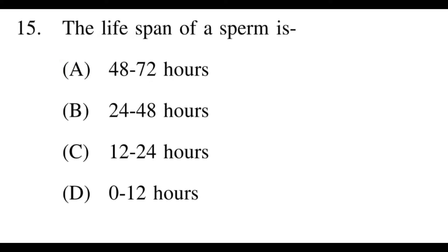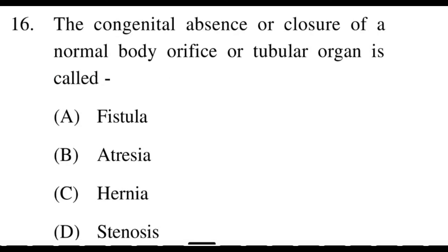Next question: The congenital absence or closure of a normal body orifice or tubular organ is called? Options: A: fistula, B: atresia, C: hernia, D: stenosis. The right answer is B, atresia. This condition is called atresia. For example, in newborns the anal orifice can be closed — that condition is called anal atresia.